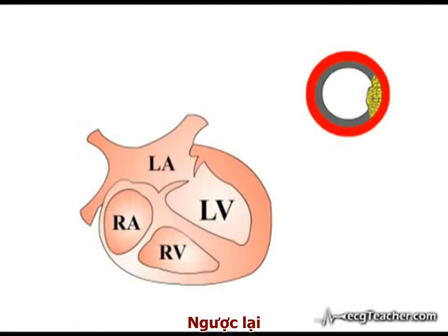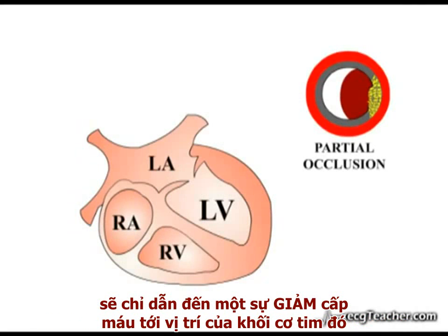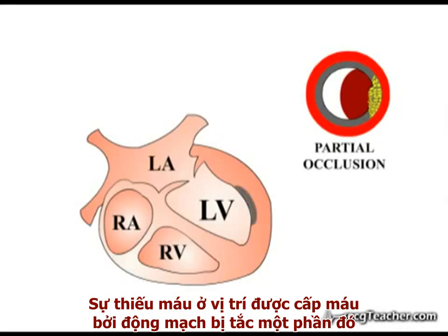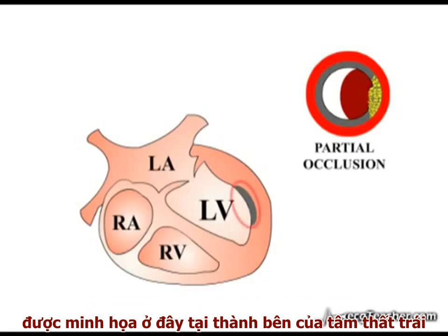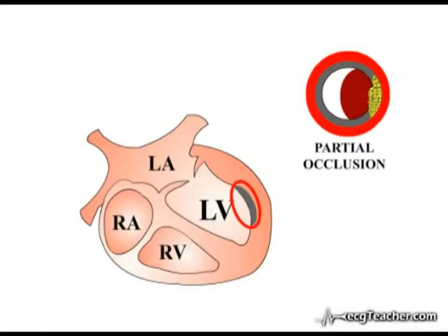In contrast, partial occlusion of a coronary arterial vessel results in an incomplete reduction of arterial supply to a region of myocardium. Ischemia in the area supplied by the partially occluded vessel, illustrated here in the lateral wall of the left ventricle, is primarily targeted on the subendocardial aspect of the affected region.